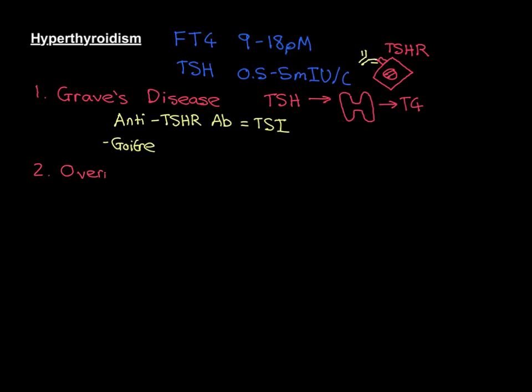Over-medication can cause hyperthyroidism. In the previous video on hypothyroidism, we saw that the treatment is to give people levothyroxine — thyroxine — which is absorbed by the gastrointestinal tract and enters the blood. If you give too much of this, they're going to end up with too high levels of thyroxine and will develop hyperthyroidism. It is a common reason that many people end up hyperthyroid, because they're on too high a dose of treatment for hypothyroidism.